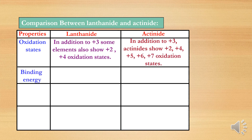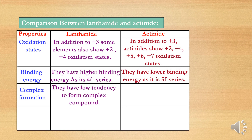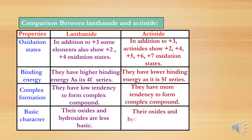Regarding binding energy: lanthanides have higher binding energy as they are the 4f series, while actinides have lower binding energy as they are the 5f series. For complex formation: lanthanides have low tendency to form complex compounds, but actinides, due to their variable oxidation states, have more tendency to form complex compounds. For basic character: lanthanide oxides and hydroxides are less basic, while actinide oxides and hydroxides are more basic.